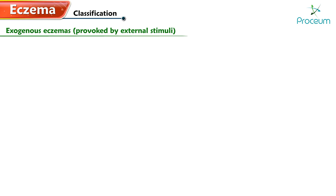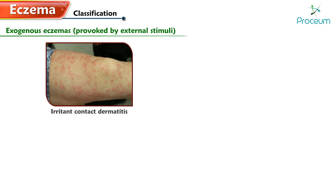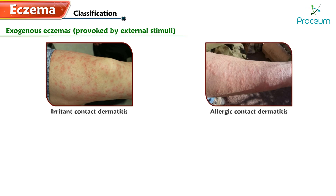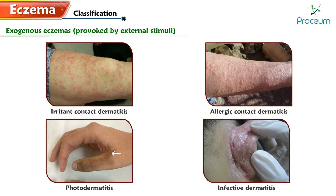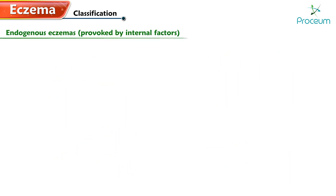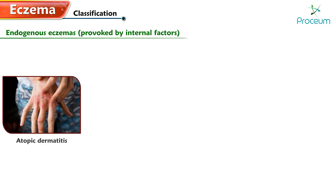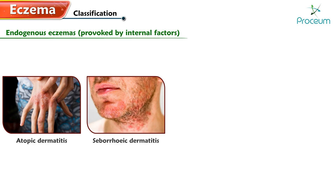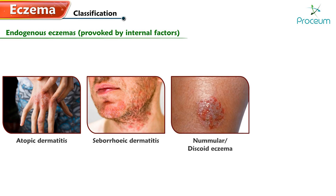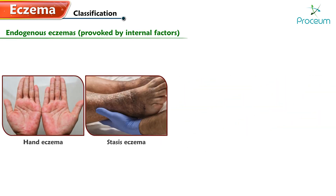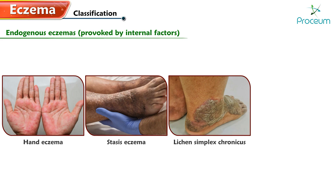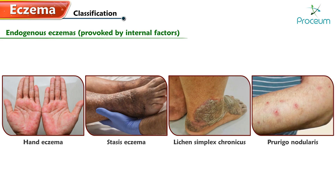Exogenous eczemas are provoked by external stimuli, such as irritant contact dermatitis, allergic contact dermatitis, photodermatitis, and infective dermatitis. Endogenous eczemas are provoked by internal factors, such as atopic dermatitis, seborrheic dermatitis, nummular or discoid eczema, osteototic eczema, hand eczema, stasis eczema, lichen simplex chronicus, and prurigo nodularis.